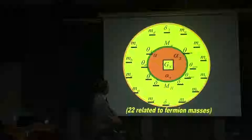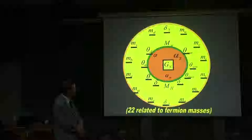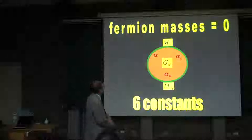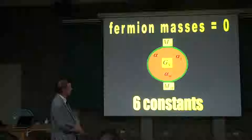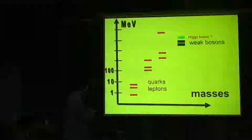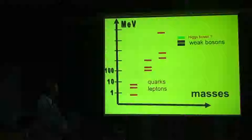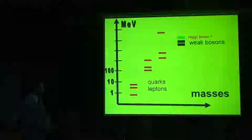Now, 22 out of these 28 — all the things which are underlined — are associated with the fermion masses. In other words, if the masses for leptons and quarks are set to zero as a first approximation, then all these underlined parameters would disappear, and we would only have six parameters: Newton's constant, the three coupling constants, the mass of the weak boson, and the mass of the Higgs. I also have a table for the various masses. The first generation — the first family of leptons and quarks — includes the electron mass, the neutrino mass of zero, and the two quark masses.